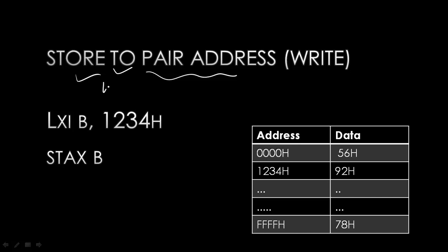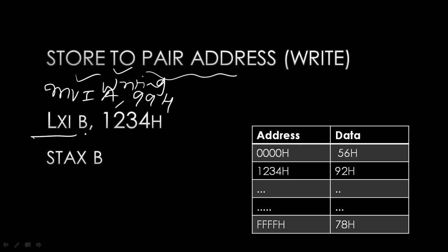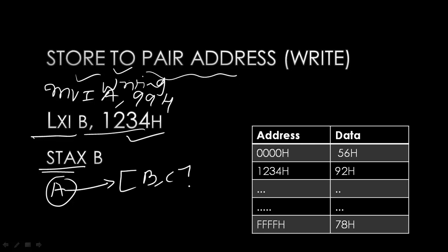For store using a pair address, use STAX B. Assuming register A contains 99H and BC pair contains 1234H, STAX B writes the accumulator's content to the address pointed to by the BC pair. So memory location 1234H will be written with the value 99H.